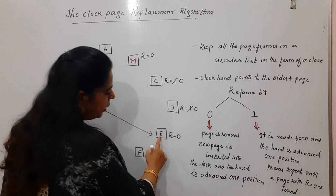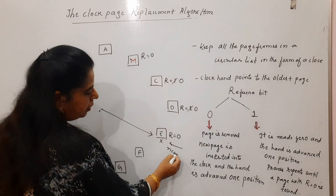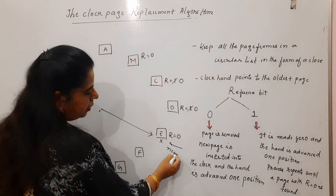Once a page with R equal to zero is found — for example, page E — then E is removed and the new page is placed in its position. This is how the clock page replacement algorithm works. If you find this session useful, please like, share, and subscribe to my channel. Thank you, bye bye, take care.